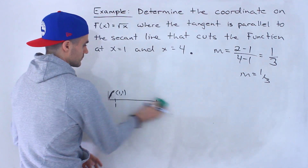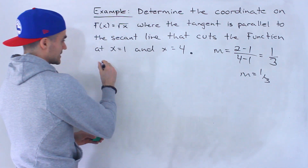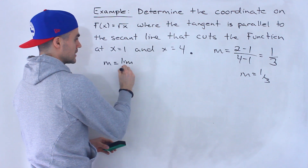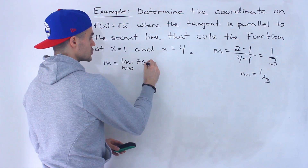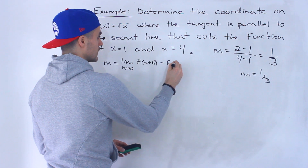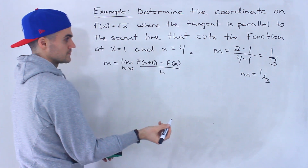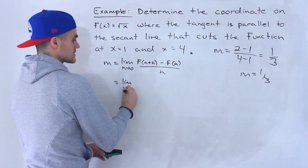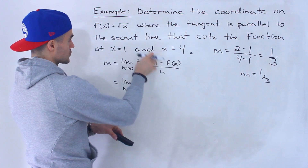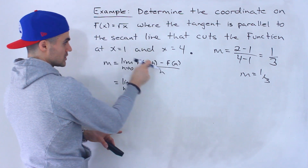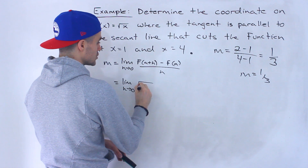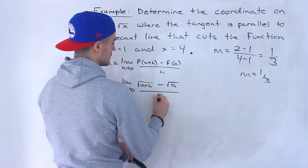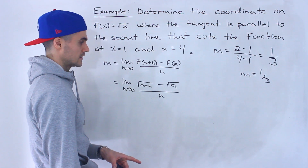To do that, we need to find an expression for the slope of the tangent, which we know is the limit as h approaches 0 of [f(a + h) - f(a)] / h. Applying this difference quotient to our specific function, f(a + h) means we plug in (a + h) for x, giving √(a + h), and f(a) means we plug in a for x, giving √a. This is all over h.